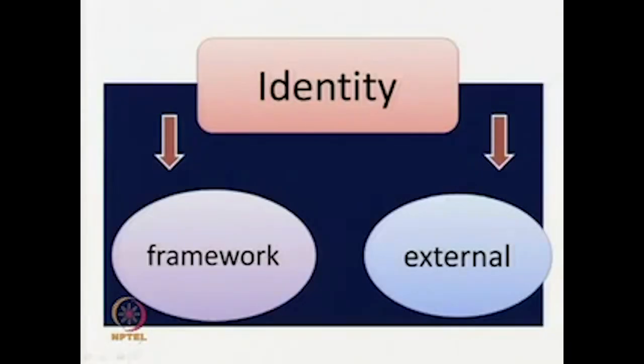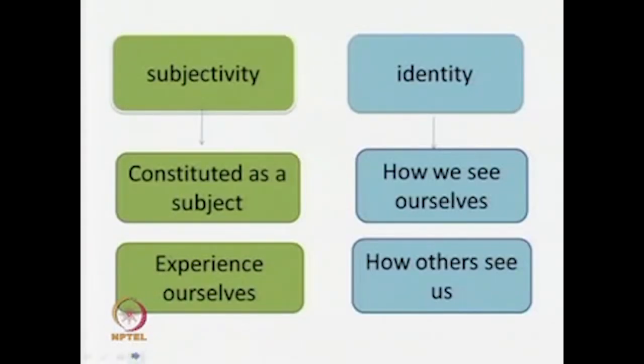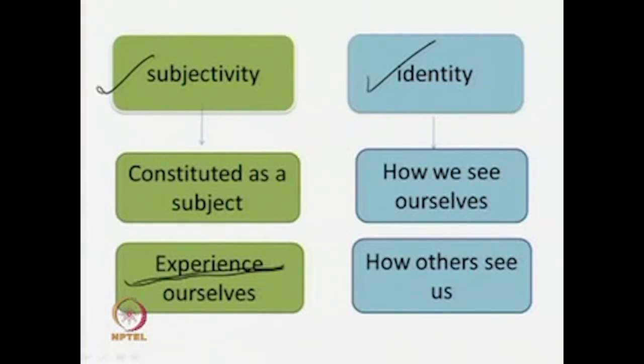How is identity external? Identity is something that, at least when compared to subjectivity, is given to you from the outside — it is society that tells you what your identity is. Subjectivity, on the other hand, is the constitution of one as a subject and deals with how we experience ourselves. It is not simply a matter of being a person, but also how we are constructed and the very experience of being a person.